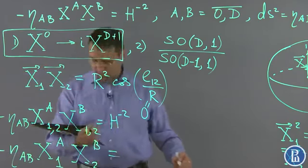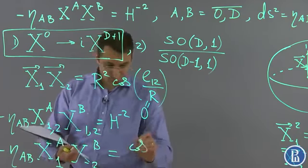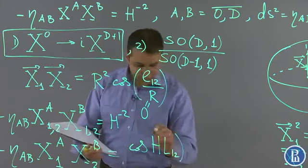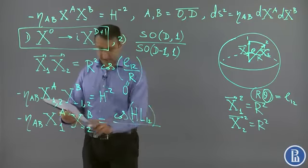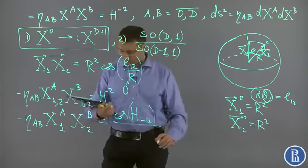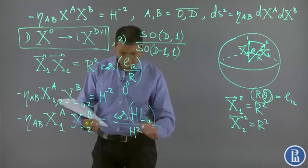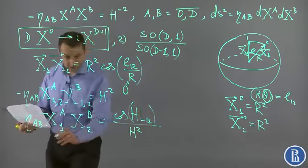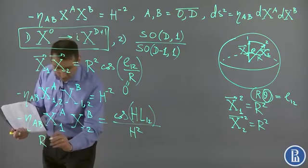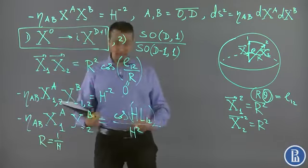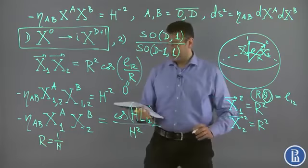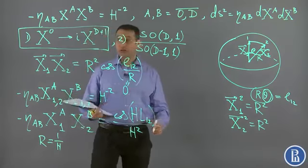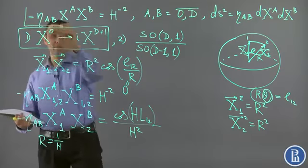We can define cosh(l12/h) where l12 is the geodesic distance between points on the hyperboloid, equal to x1·x2 divided by h squared. This formula can be obtained from the spherical one under Wick rotation and change of r to 1 over h.